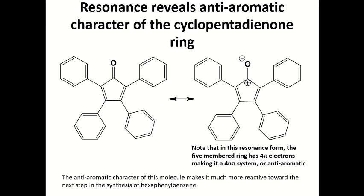Again, the resonance reveals the anti-aromatic character of the cyclopentadienyl ring. As you can see here, in this resonance form, the five-member ring has a 4 pi electron, making a 4n pi system or anti-aromatic. This anti-aromatic character of the molecule makes it much more reactive toward the next step in the synthesis of hexaphenylbenzene.